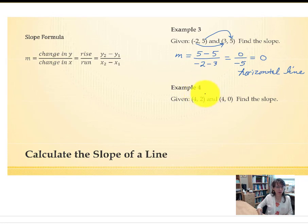In example 4, again, we're going to find the slope by taking the change in our y values, 2 minus 0. The change in the x values is 4 minus 4. So the difference in the numerator is 2. 4 minus 4 would be 0.